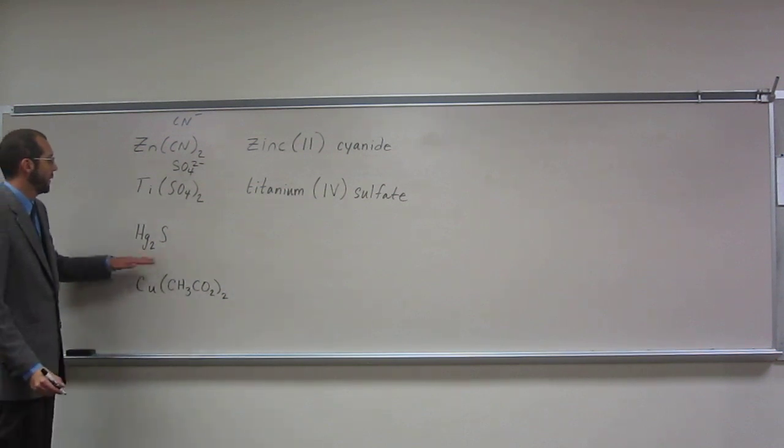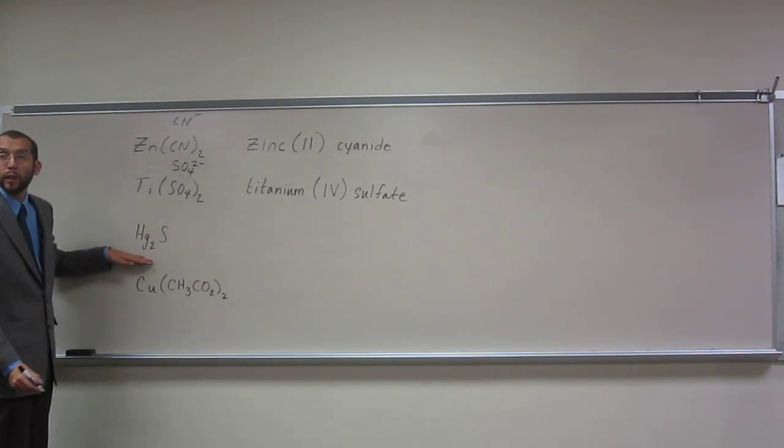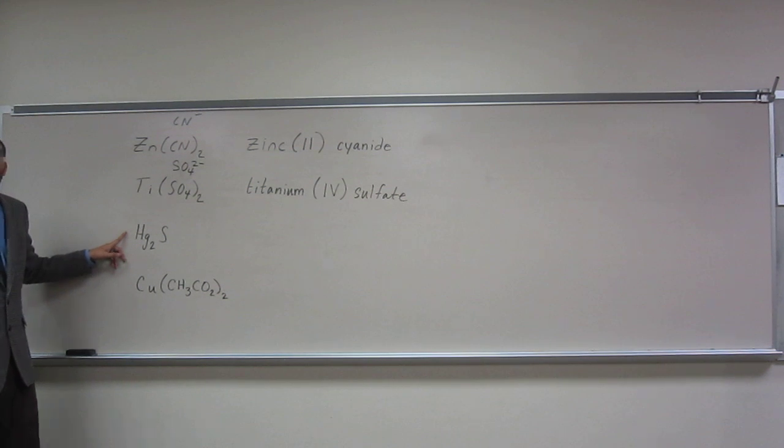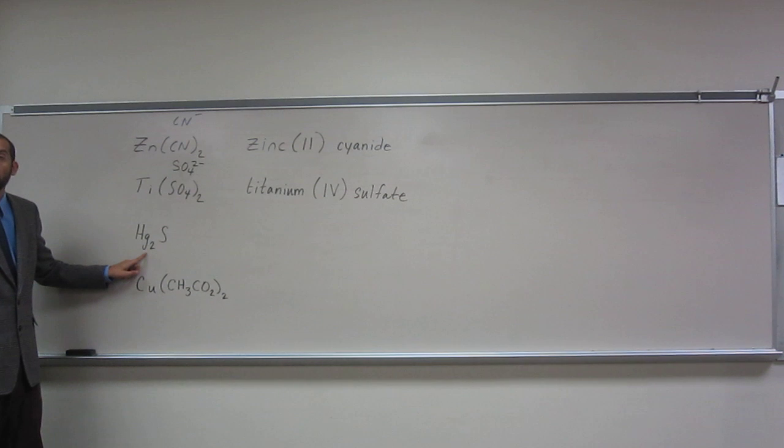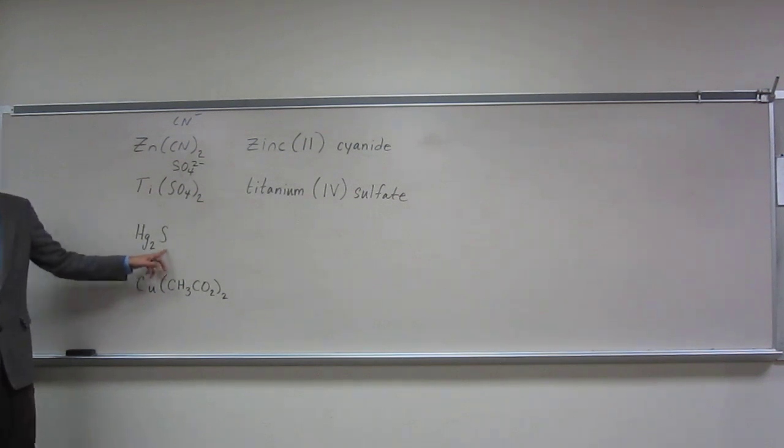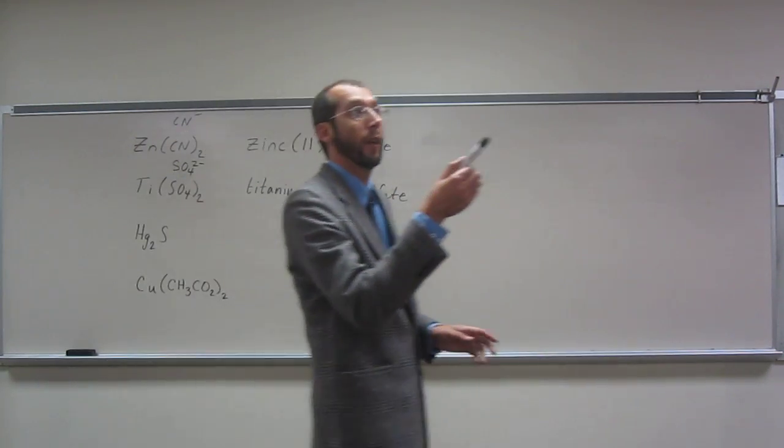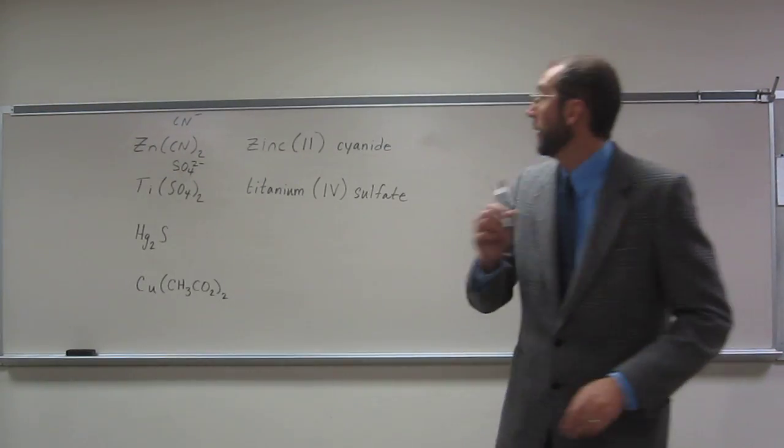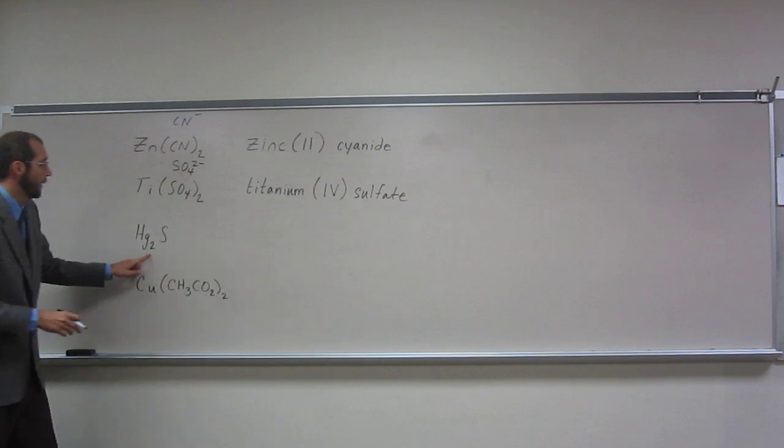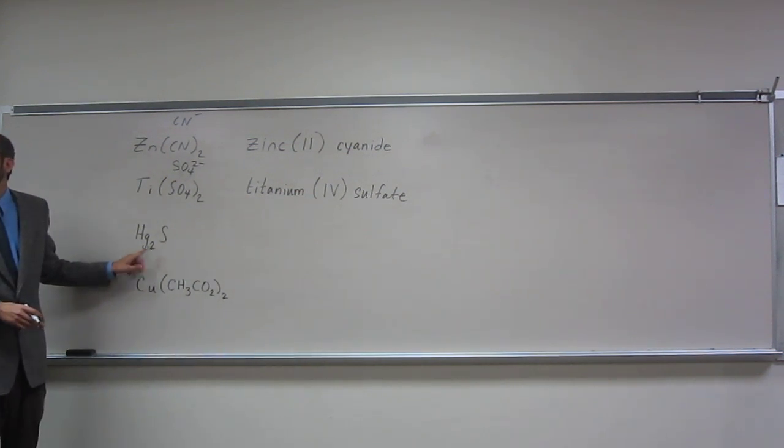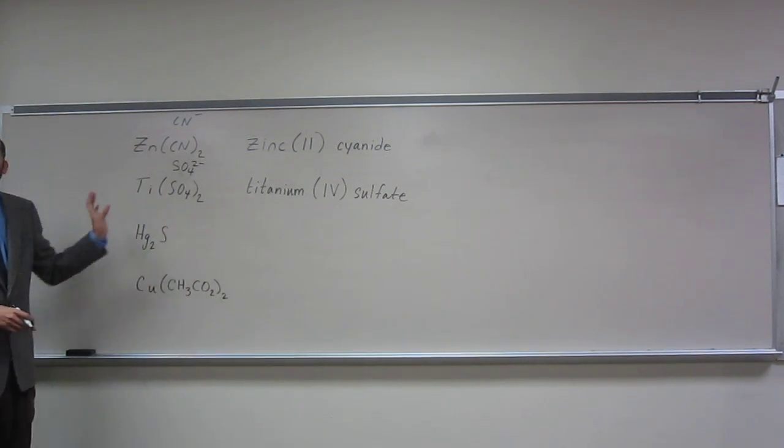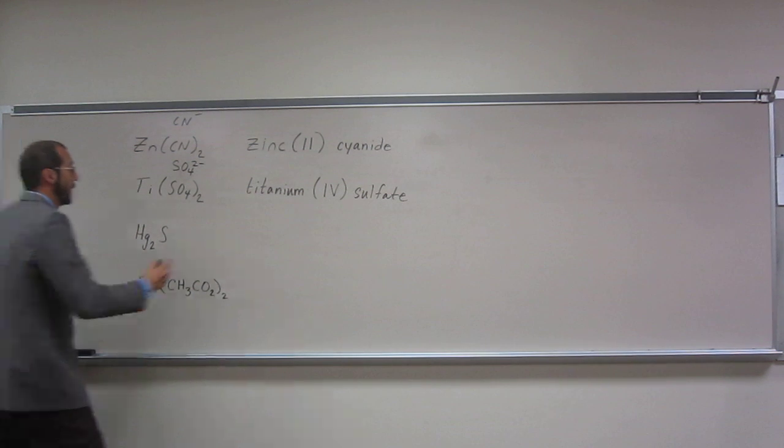Mercury is a transition metal. If you didn't know, Hg is mercury - that's one you might want to remember. Sulfur has a regular charge, which we should all know by now. It's minus two. Here it's taking two mercuries to counterbalance that charge. So what would it be? Mercury one.